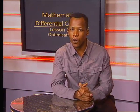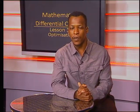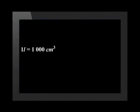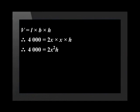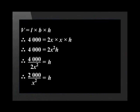We need to determine the measurement of the height in centimeters. Therefore, we have to convert the volume from liters to centimeters and use the volume formula of a rectangular prism. There are 1,000 centimeters cubed in a liter, therefore 4 liters equals 4,000 centimeters cubed. The formula for the volume of a rectangular prism is equal to the length times breadth times height. We substitute the volume of 4,000, the length of 2x, the breadth of x, and the height of h to get 4,000 equals 2x squared times h. Dividing both sides by 2x squared gives us h equals 2,000 divided by x squared.